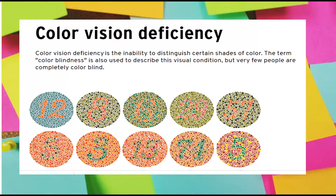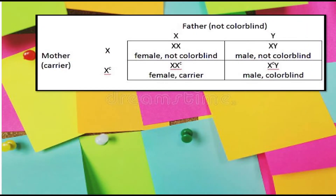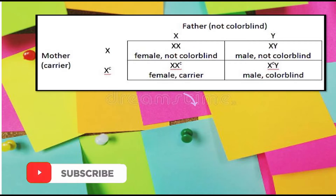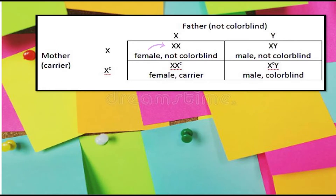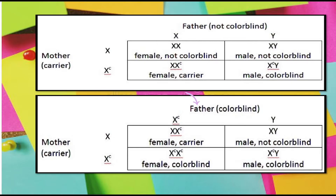A color vision deficiency is the inability to distinguish certain shades of color. The term colorblindness is also used to describe this visual condition, but very few people are completely colorblind. For example, a father who is not colorblind mated to a mother who is a carrier of colorblindness. The results are: a female not colorblind, XX female carrier, XY male not colorblind, and XY male not colorblind. In another example, a father who is colorblind and a mother who is a carrier — the result includes XX female carrier.